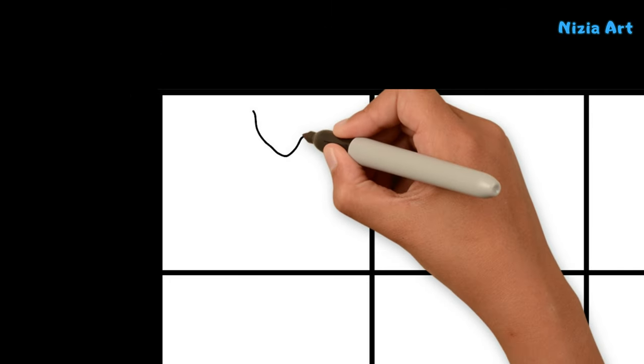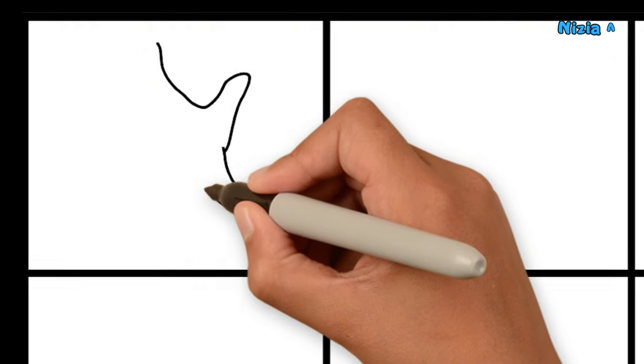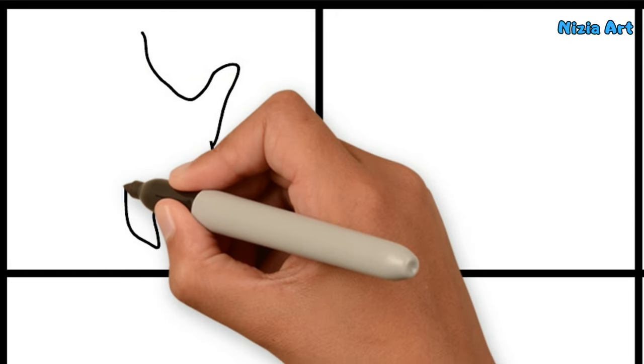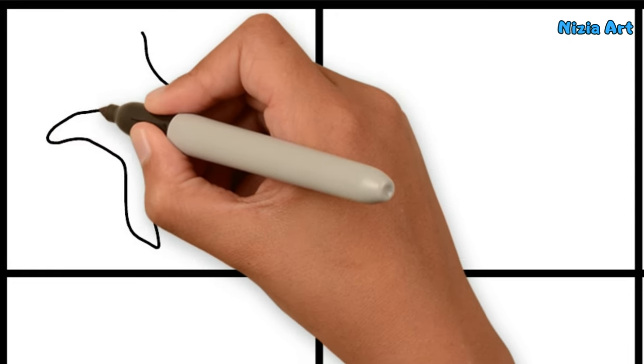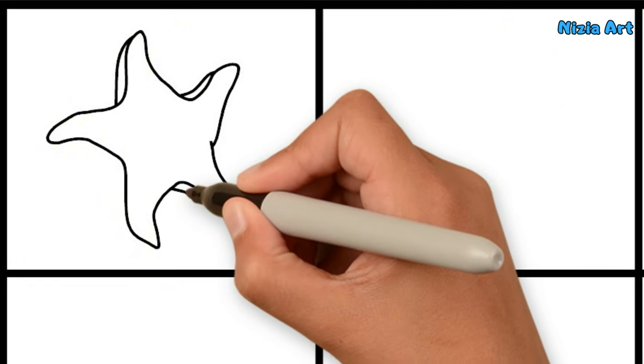First, I'm drawing a starfish. This creature has a star-shaped body and is often found on the seabed. They are usually colorful and have moveable arms.